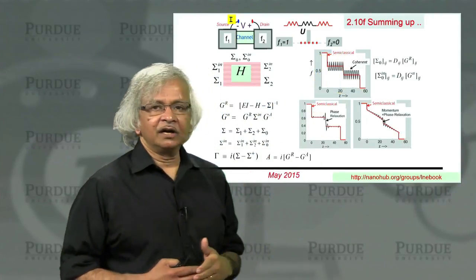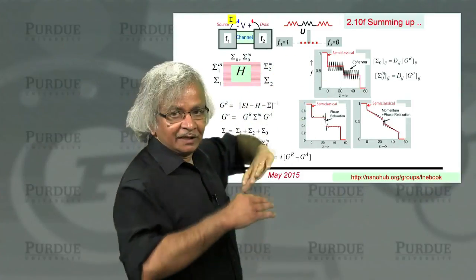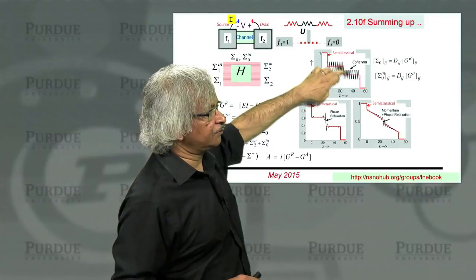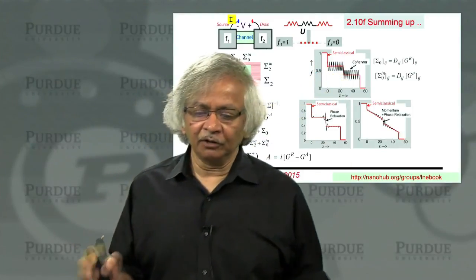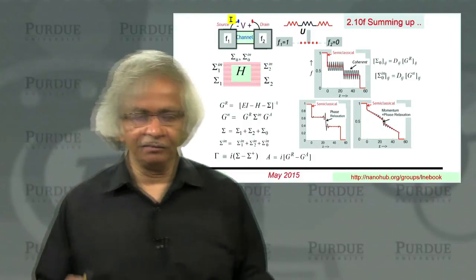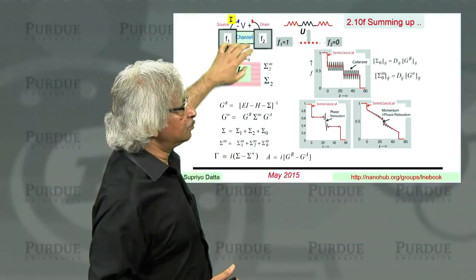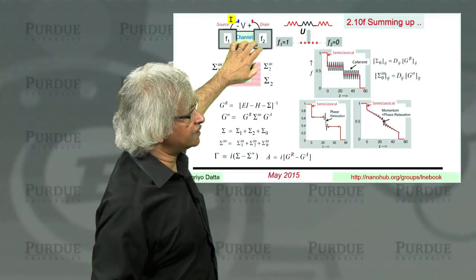That's what you would get in a coherent theory. On the other hand, if you use an incoherent theory, which means like if you use a particle picture, semi-classical, then you get this red curve. Now the question is, how do you interpolate between them? And the point I want to make is NEGF allows you to interpolate between them, which is do a full quantum theory but include dephasing processes.